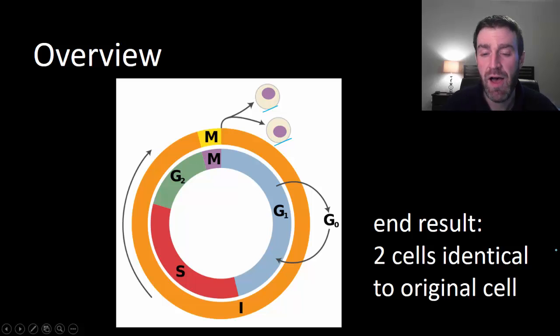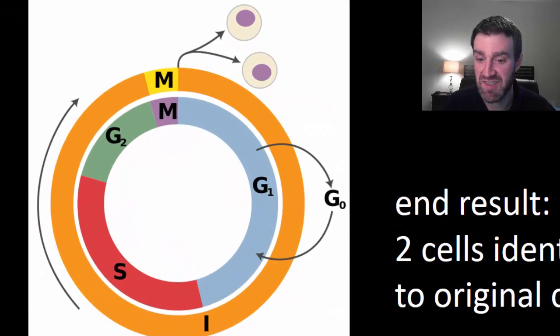We often draw this as a cycle because those two cells can then repeat the steps to make even more cells if necessary.